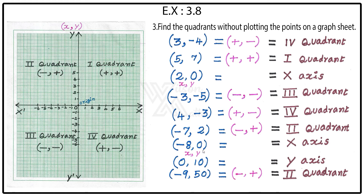Next point: 0 comma 10. The x value is zero and y is 10. Therefore it lies on the y-axis. When x is zero, the point lies on the y-axis.